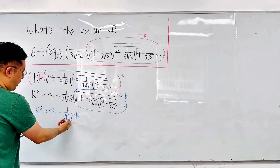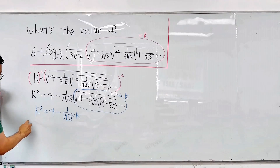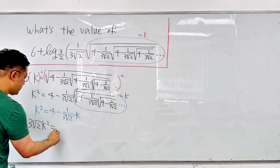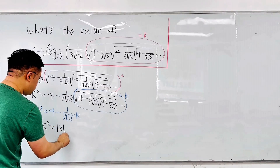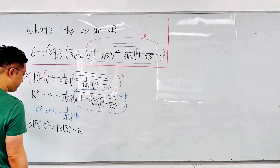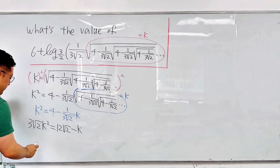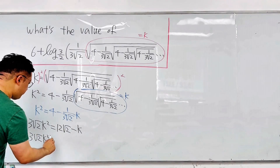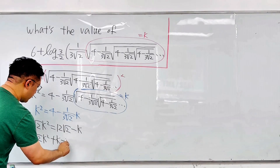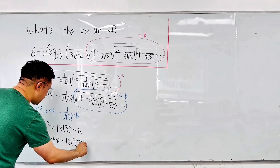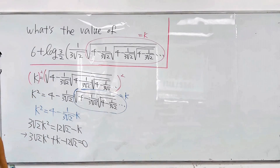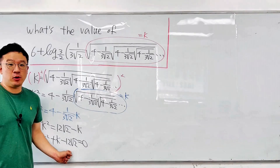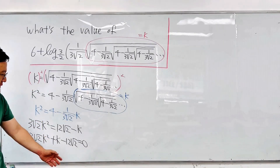So our expression becomes K² = 4 − (1/3√2)·K. Let me multiply both sides by 3√2. Then we have 3√2·K² = 12√2 − K. Moving both terms to the left-hand side gives us 3√2·K² + K − 12√2 = 0, which is a quadratic equation in K.